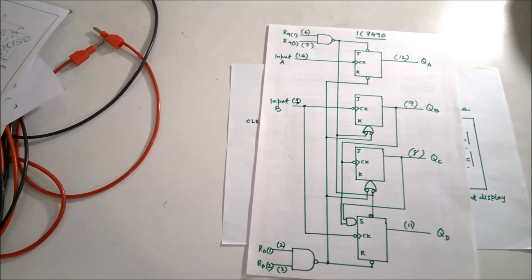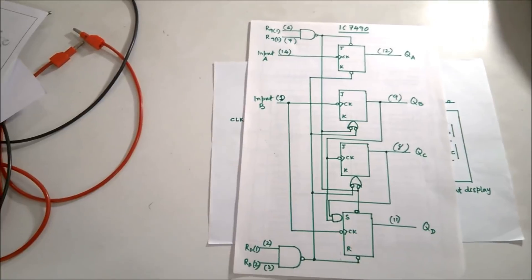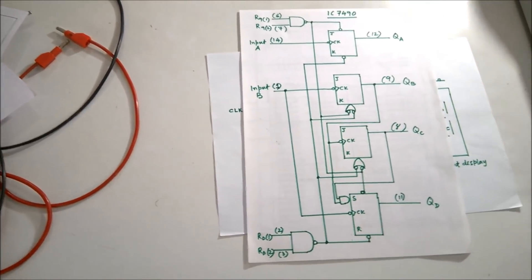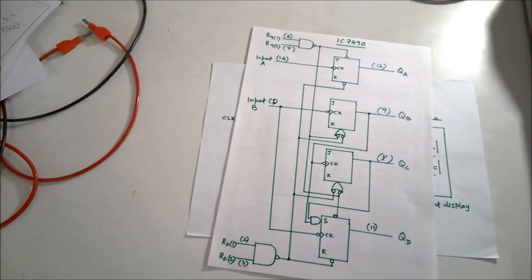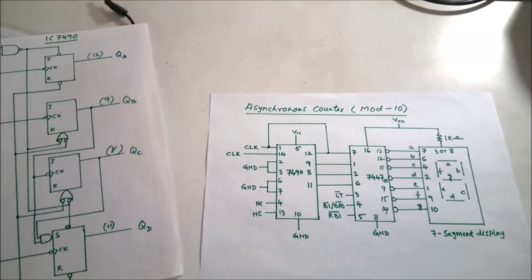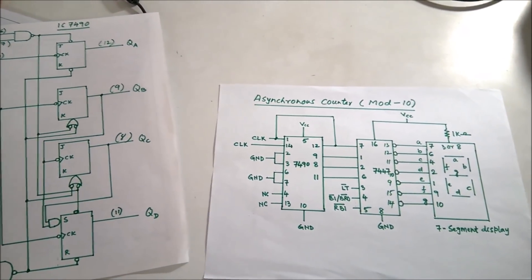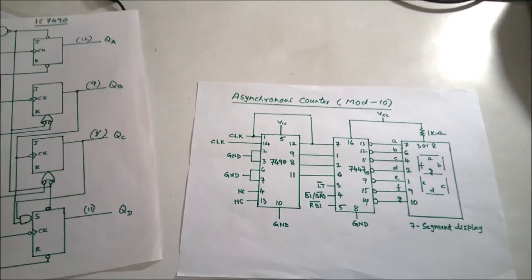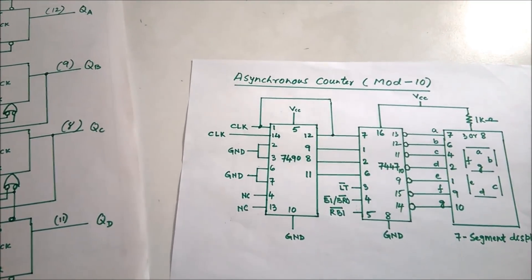We can also display a subset of values by implementing the resets properly. Since we are going for mod 10, the resets are not required. Therefore, reset pins 2 and 3 are connected to ground, and reset pins 6 and 7 are also connected to ground to deactivate them.